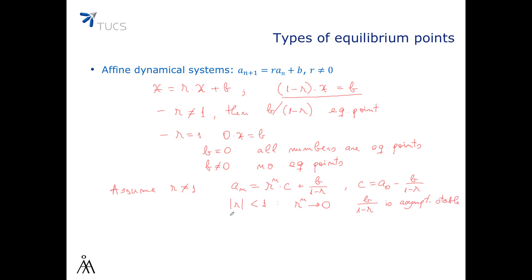If, on the other hand, the absolute value of r is bigger than 1, then r to the power n will tend to infinity — and if r is negative, the modulus of r to the power n will tend to infinity. And so that means that b over (1 minus r) is unstable.